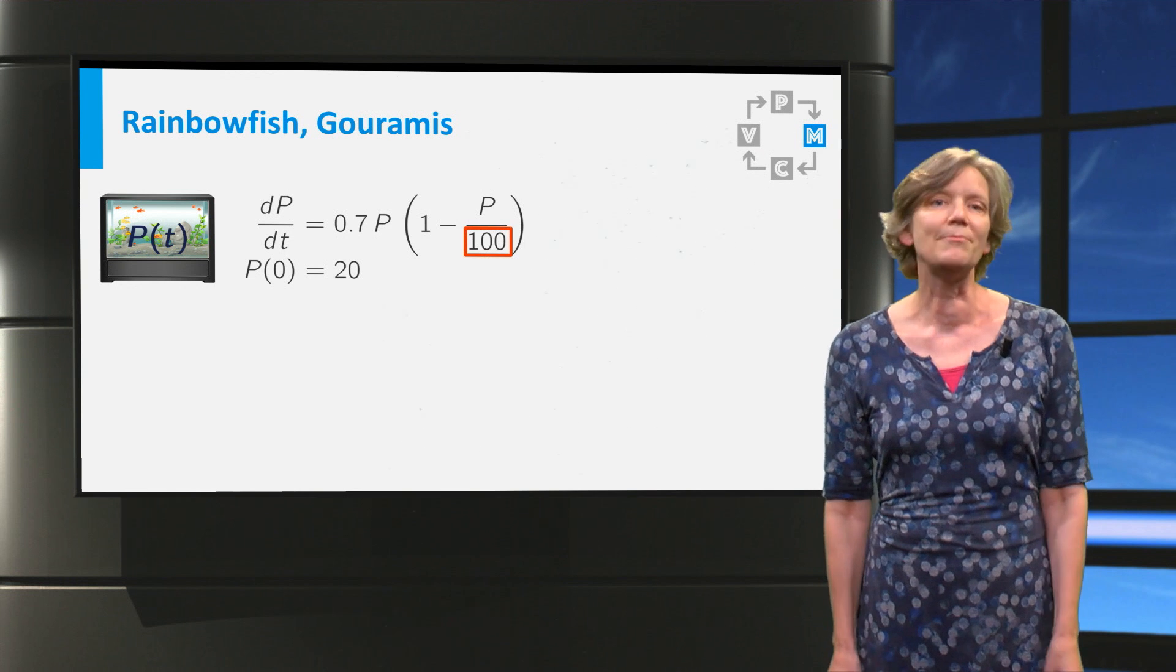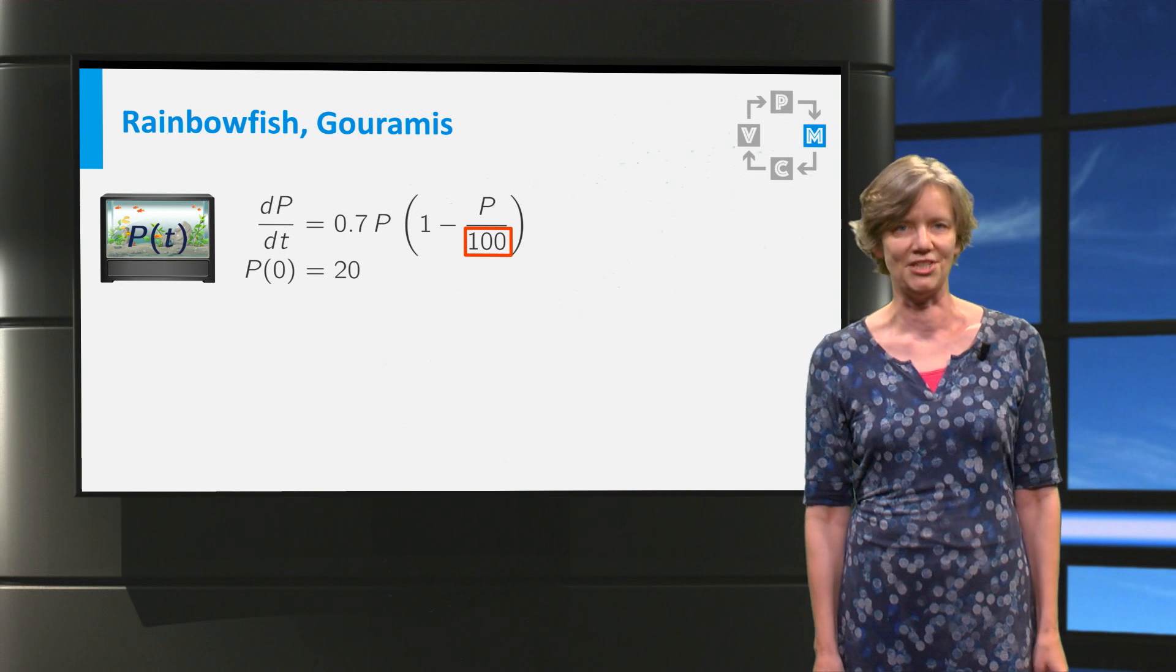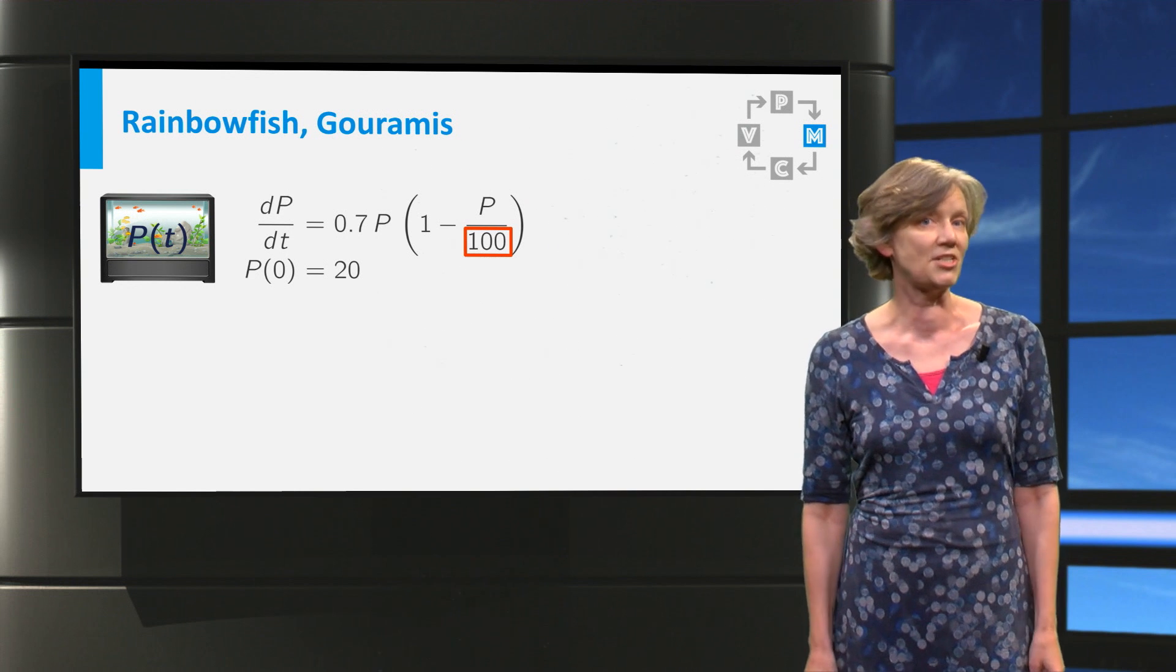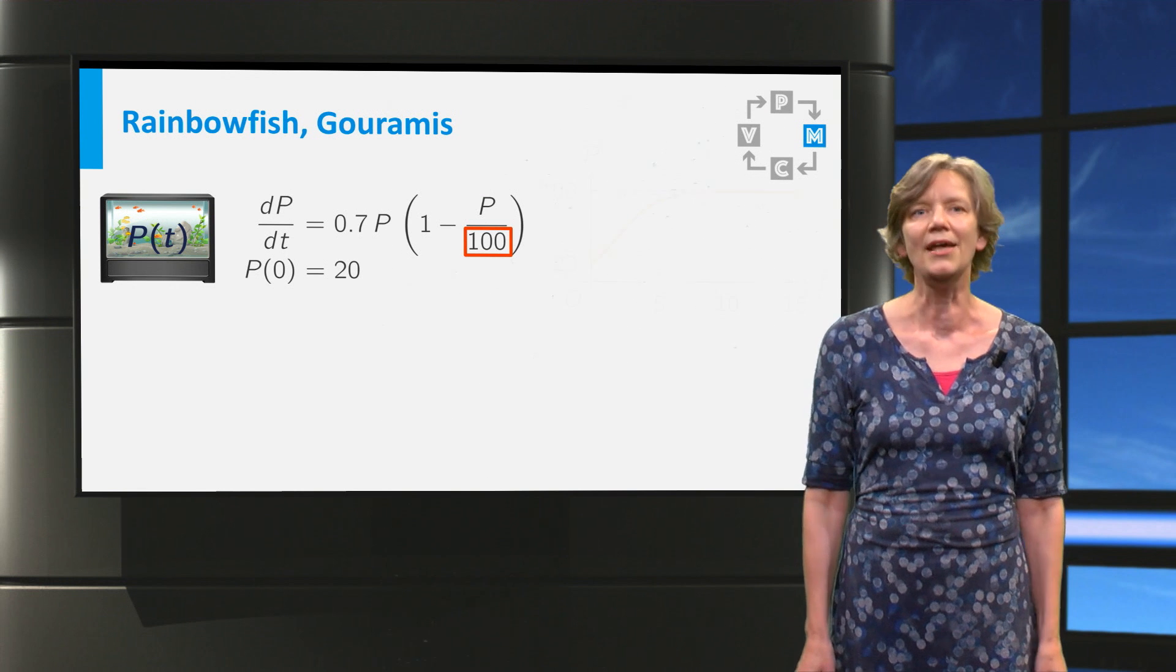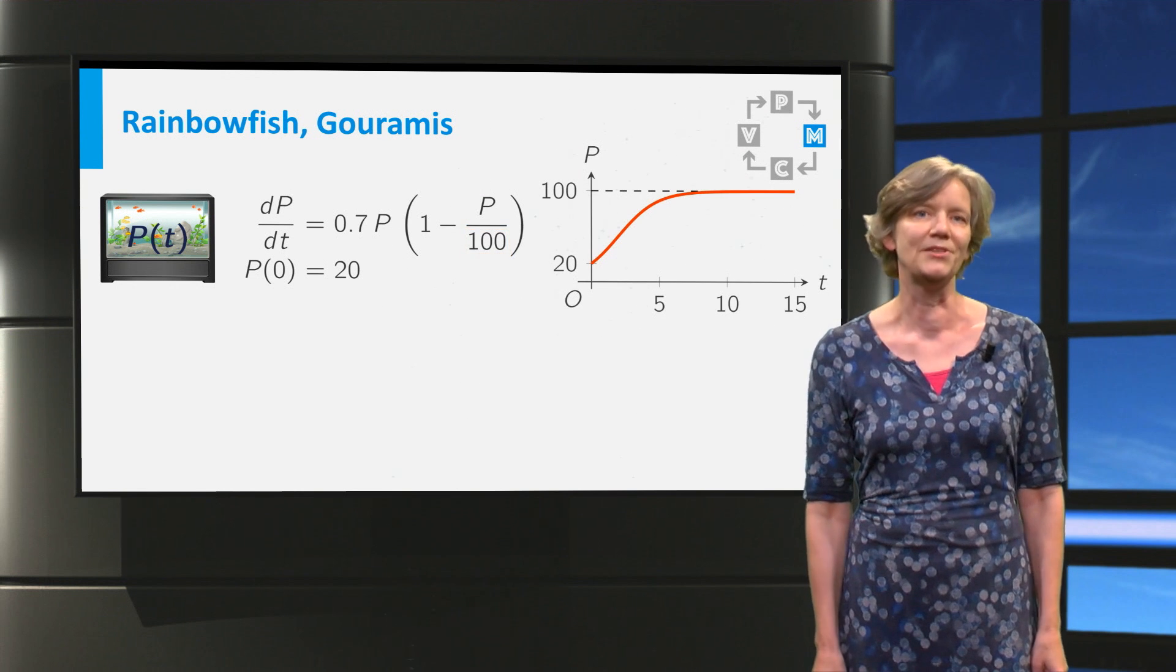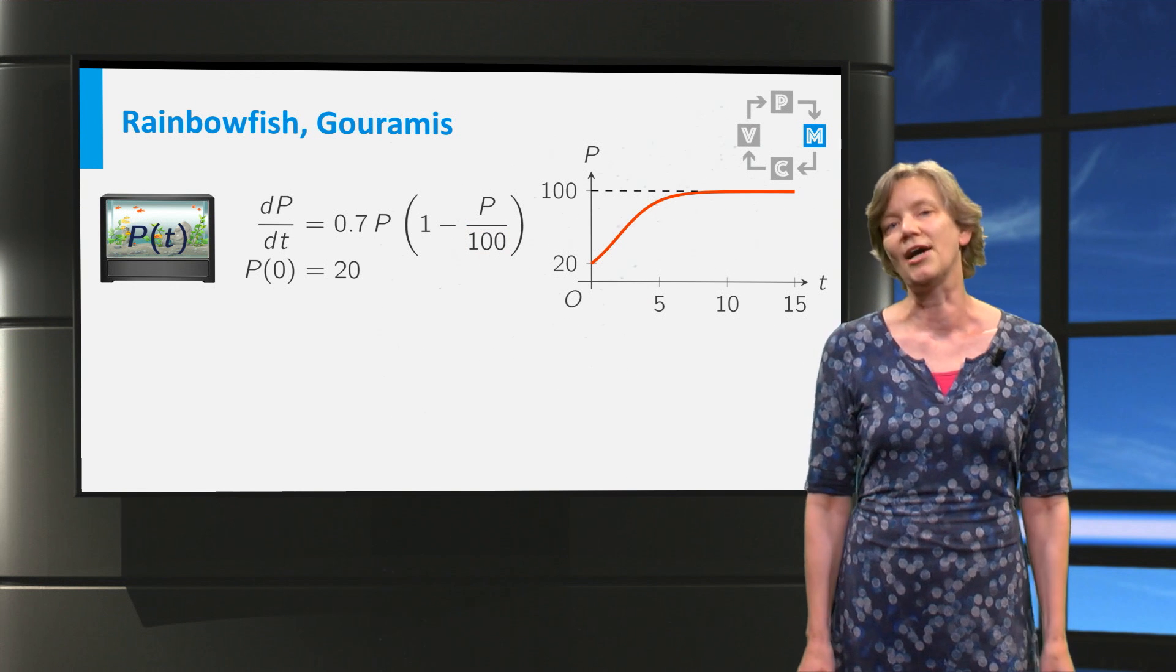You see that the aquarium is large enough for a healthy population of 100 rainbow fish. As the client does not sell any fish there is no harvesting term. This is the graph of the solution. The population grows logistically from 20 to 100 fish.